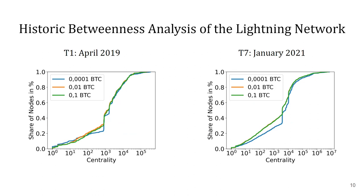We start by examining our oldest network snapshot in April 2019. We do not include nodes with a betweenness centrality of 0, as they only represent leaf nodes in the graph and have no further meaning for our analysis. We can detect that all transaction sizes have a similar impact on the centrality distribution of the nodes in the network. However, this is most probably due to the lower number of nodes in the network at that point in time, and therefore there is also a limited number of paths that can be selected between these nodes.